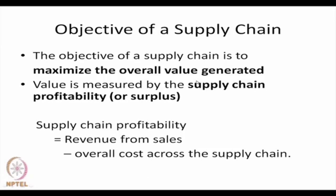The overall objective of a supply chain is to maximize the overall value generated, measured by supply chain profitability. Supply chain profitability or surplus is the revenue from sales — whatever the customer pays — minus the overall cost across the supply chain.